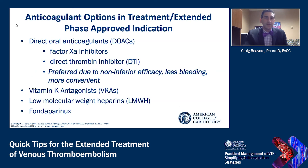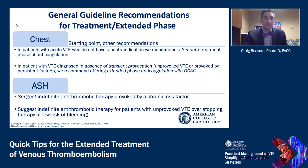The anticoagulation options for these phases of treatment from the FDA perspective include the direct-acting oral anticoagulants, which are preferred due to non-inferiority with efficacy, less bleeding, and more convenience; the vitamin K antagonists; low molecular weight heparin; and fondaparinux. Looking at the CHEST guidelines at a high level, these represent some starting-point recommendations.